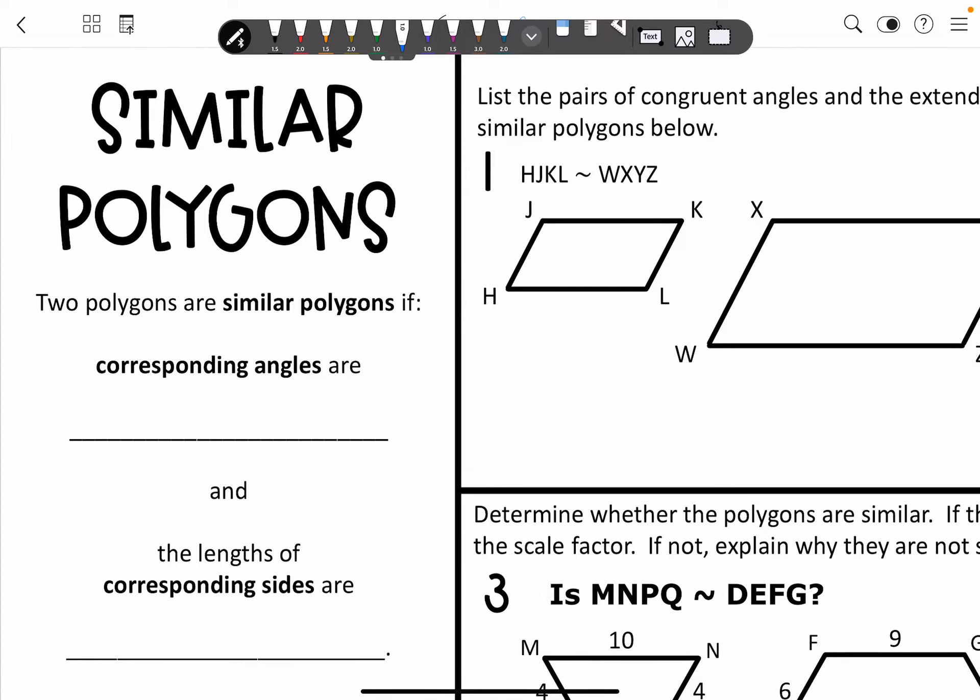Hey everyone, so we're going to be talking about similar polygons today. I want to remind you that two polygons are similar polygons if the corresponding angles are congruent and the lengths of corresponding sides are proportional.